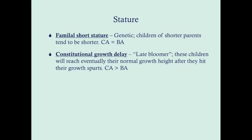Familial short stature is a genetic cause — children of shorter parents tend to be shorter, and the chronologic age will always equal bone age. Constitutional growth delay is the child who's a late bloomer, and they tend to be born to parents who were also late bloomers. You can ask the parents if they hit their growth spurt later in life. These children will eventually reach their normal height after hitting their growth spurts — they'll catch up — and with constitutional growth delay, the chronologic age will be greater than the bone age.